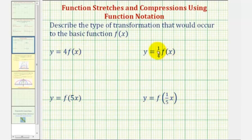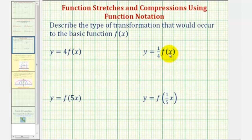Looking at these first two, notice how we're multiplying f of x by a constant, where f of x would be the function values, or y values. And since y values lie on the vertical axis, these two will either give us a vertical stretch or a vertical compression.